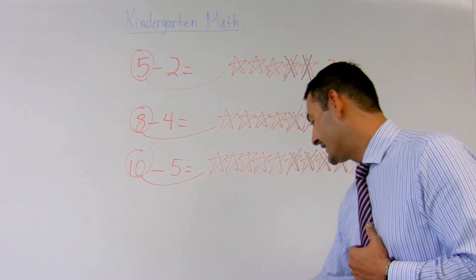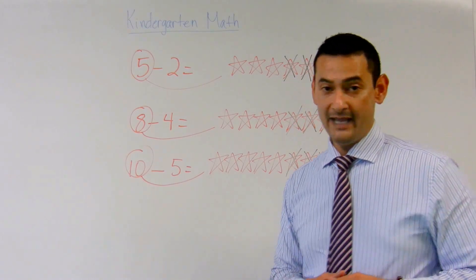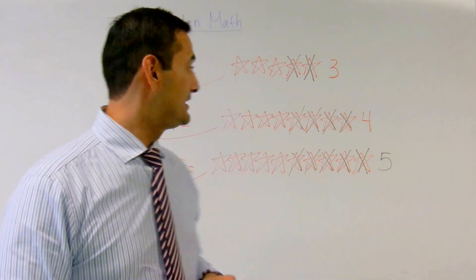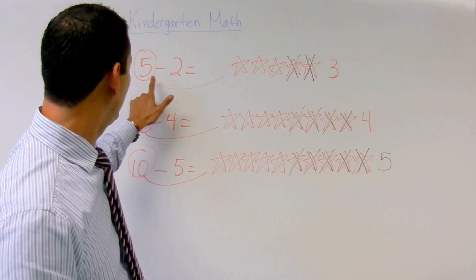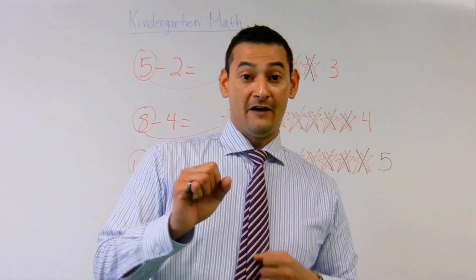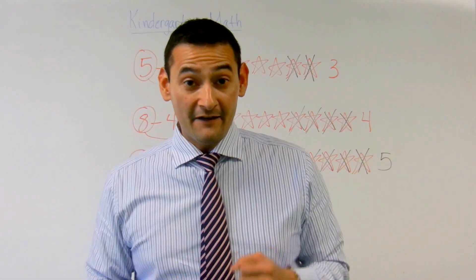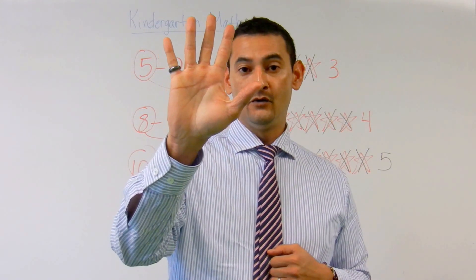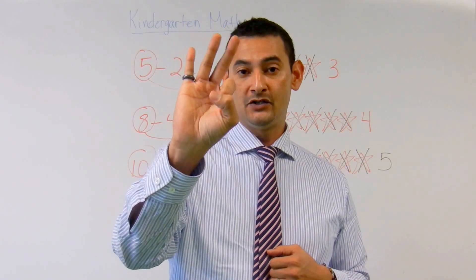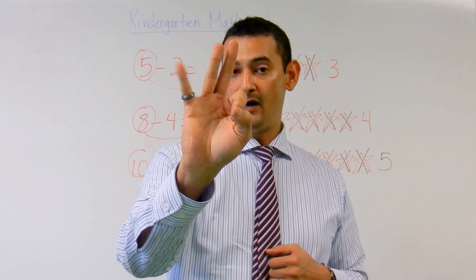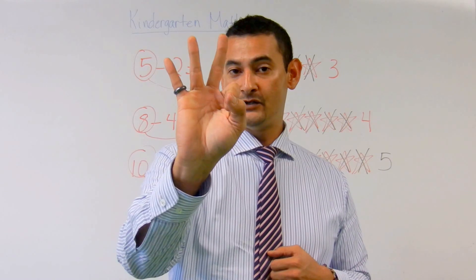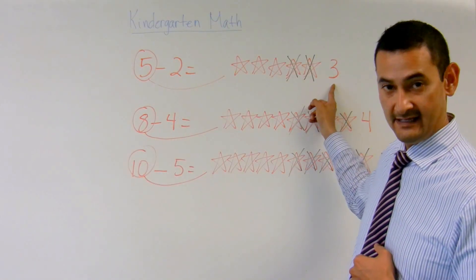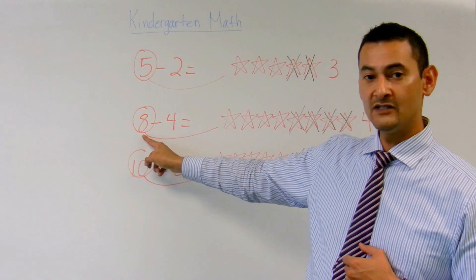Now let's take a look at these using our fingers, because fingers are okay too. The first problem is five take away two. So first I'm going to count five fingers: one, two, three, four, five. I'm going to take away two — one, two. How many do I have? One, two, three. Is that three? Yes it is.